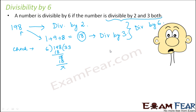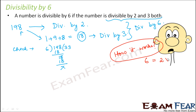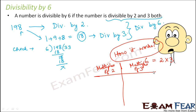Now let us understand why this works. 6 can be written as 2 × 3, so 2 and 3 are both factors of 6. To understand this, let us write the multiples of 2 and multiples of 3. Multiples of 2: 2, 4, 6, 8, 10, 12, 14, 16, 18, and so on.